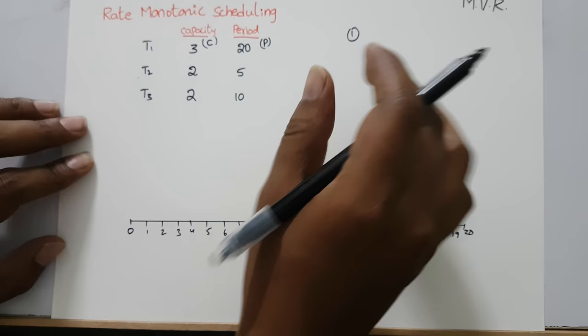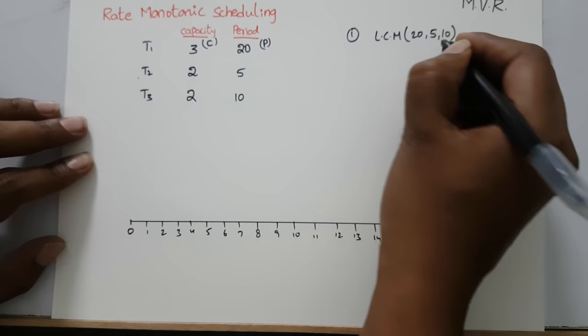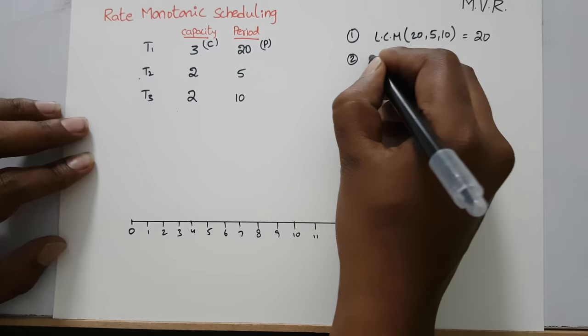The scheduling time can be found by calculating the LCM of the periods: 20, 5, and 10. The LCM of 20, 5, and 10 is equal to 20. So within 20 time units we can schedule this algorithm.